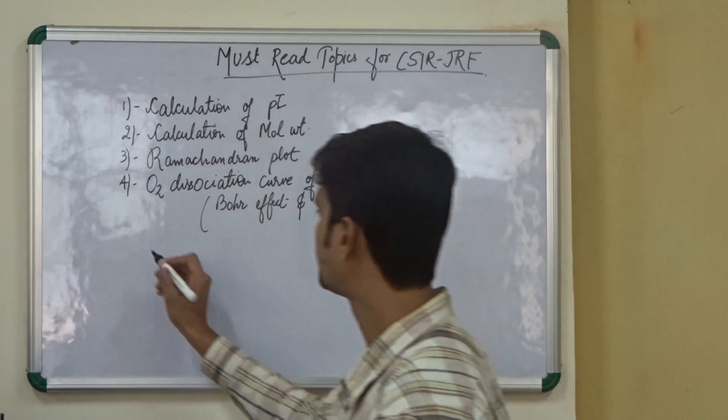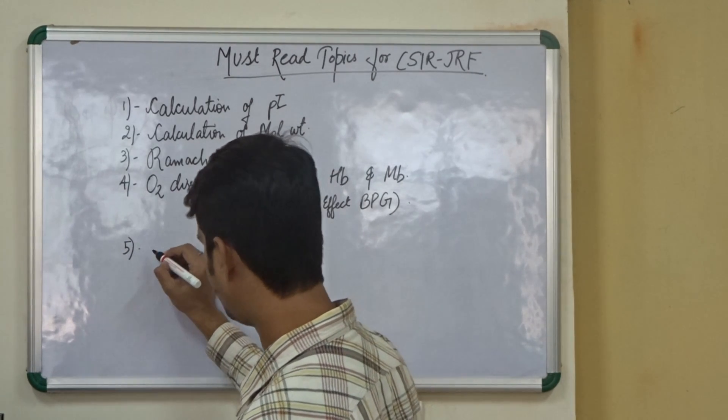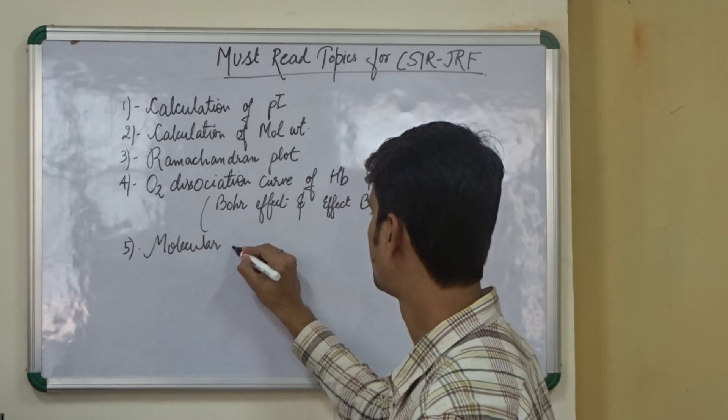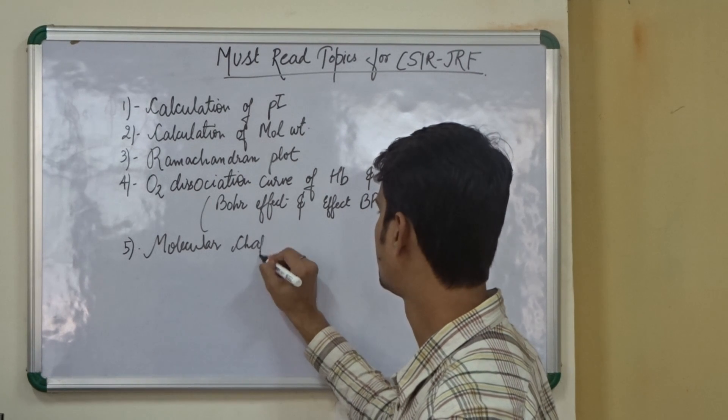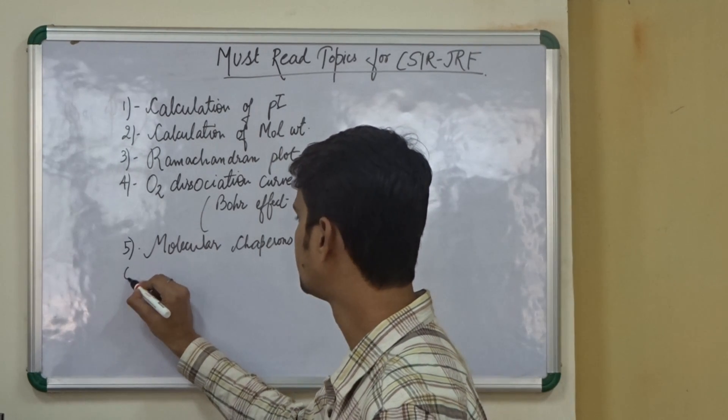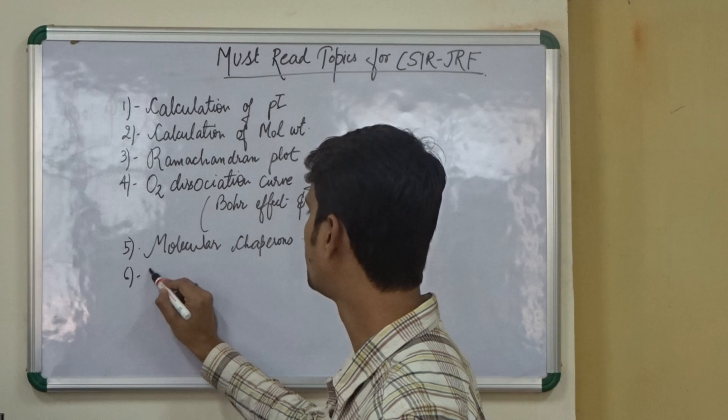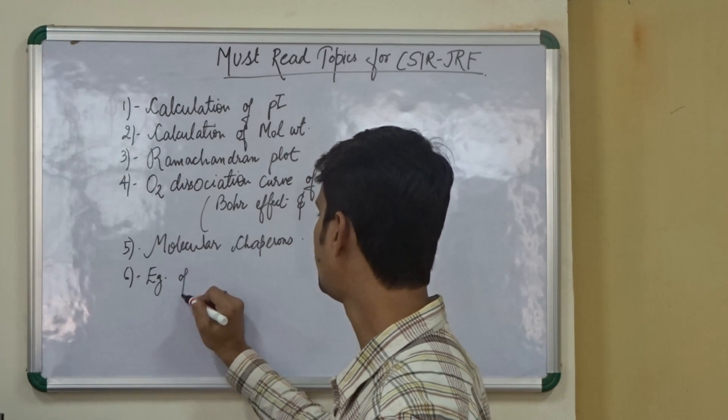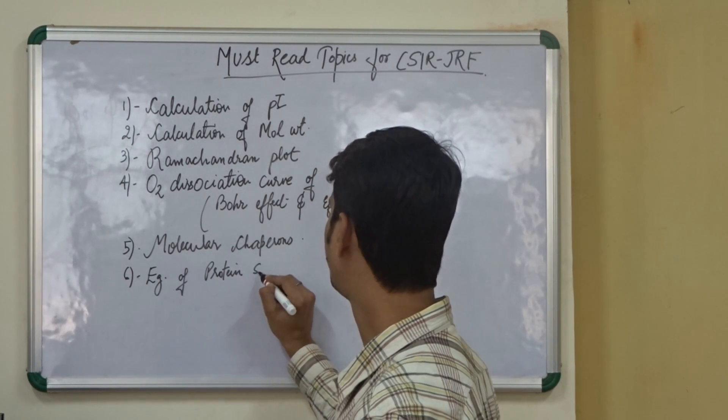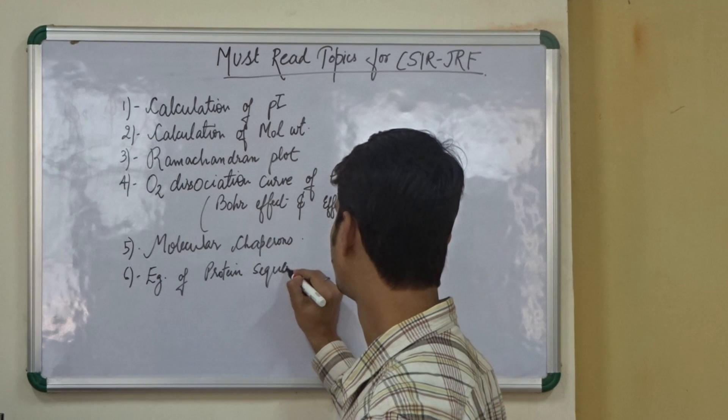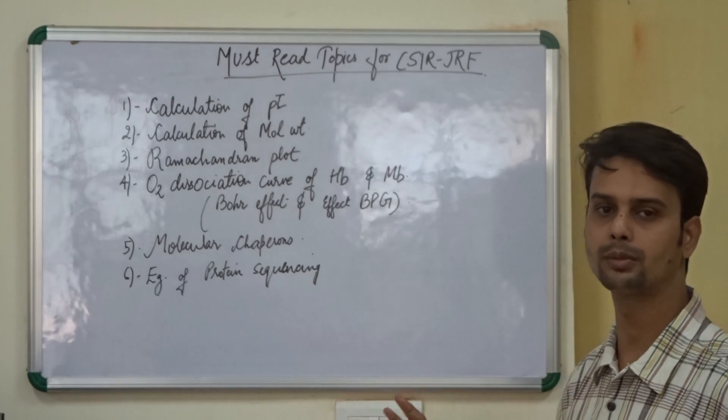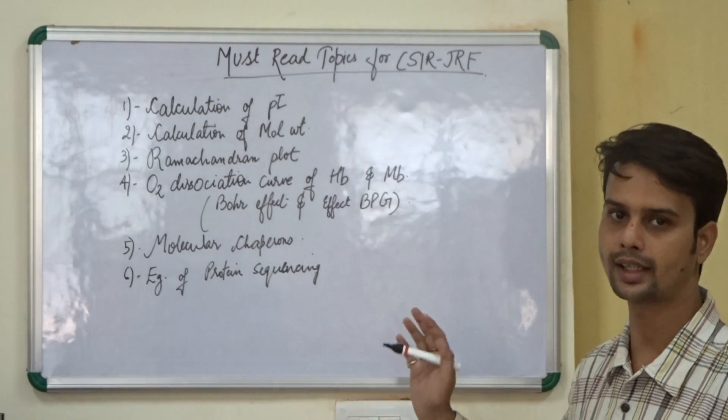The next important topic is molecular chaperones. And the last one is, we need to know about the examples of protein sequencing. These are the six topics that we have selected from the biochemistry part, the molecules and their interactions.